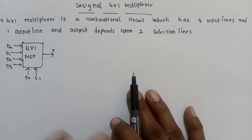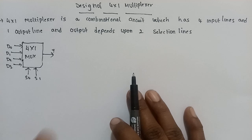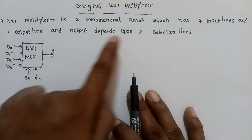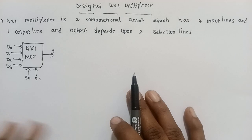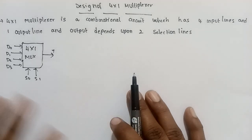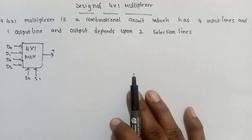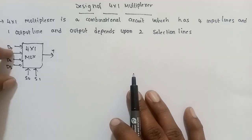The first step is to understand the problem definition of the 4x1 multiplexer. The second step is to determine the inputs and outputs.